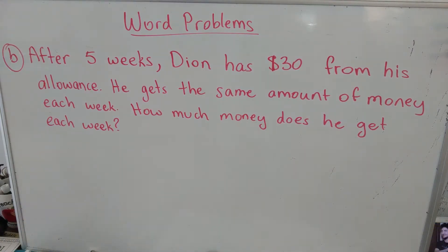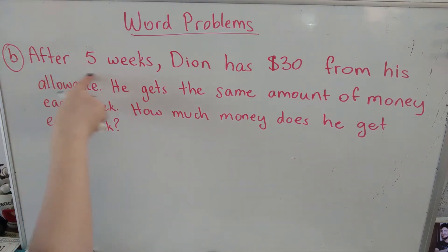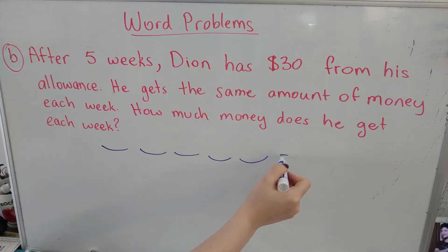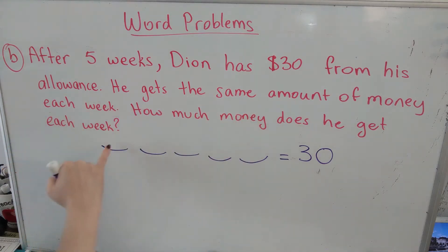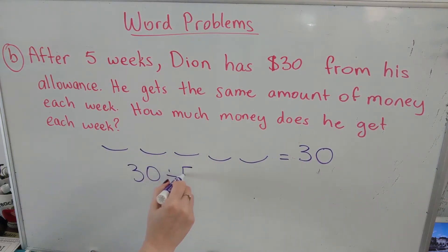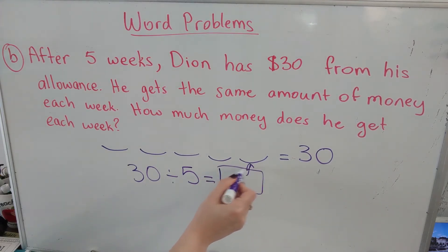Letter B. After five weeks, Dion has $30 from his allowance. He gets the same amount of money each week. How much money does he get each week? So this says after five weeks — one, two, three, four, five — he has $30 total from his allowance. Each week he gets the same amount, meaning they are equal, so we're going to share $30 equally — we're going to divide into five weeks. And our answer will tell us how much he gets each week.